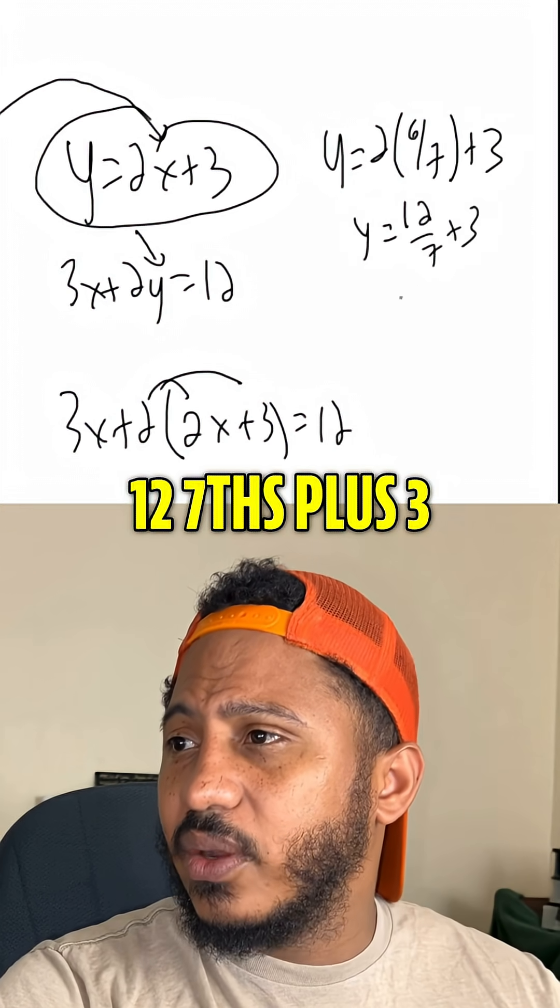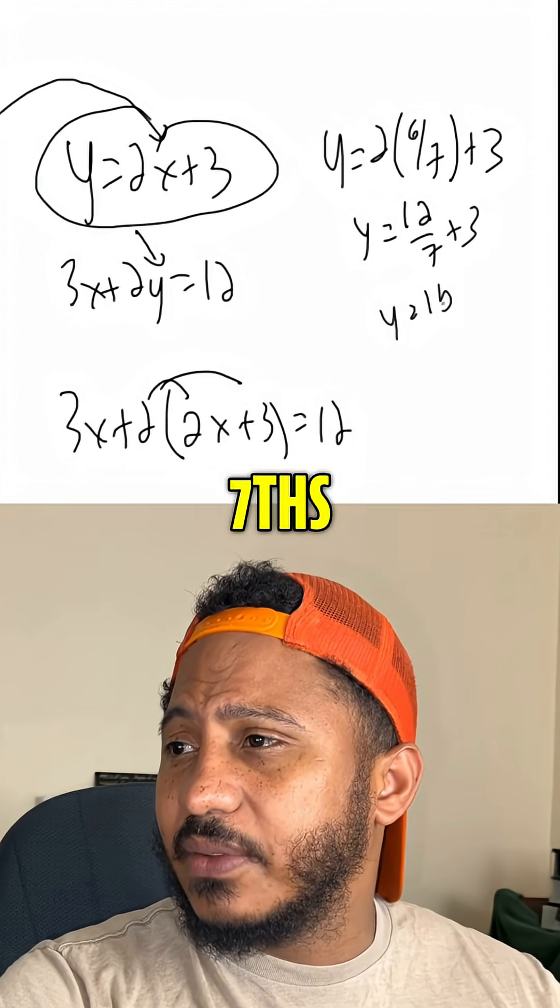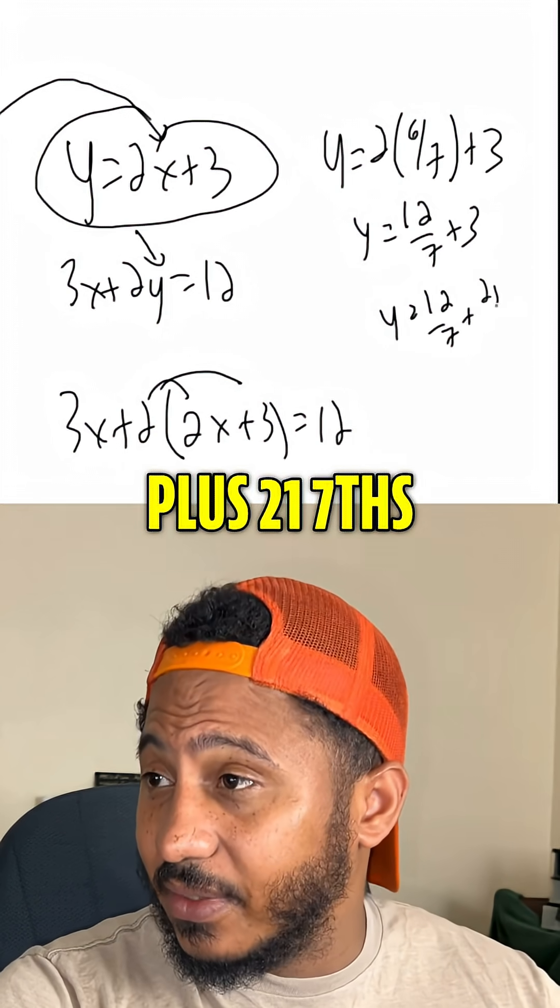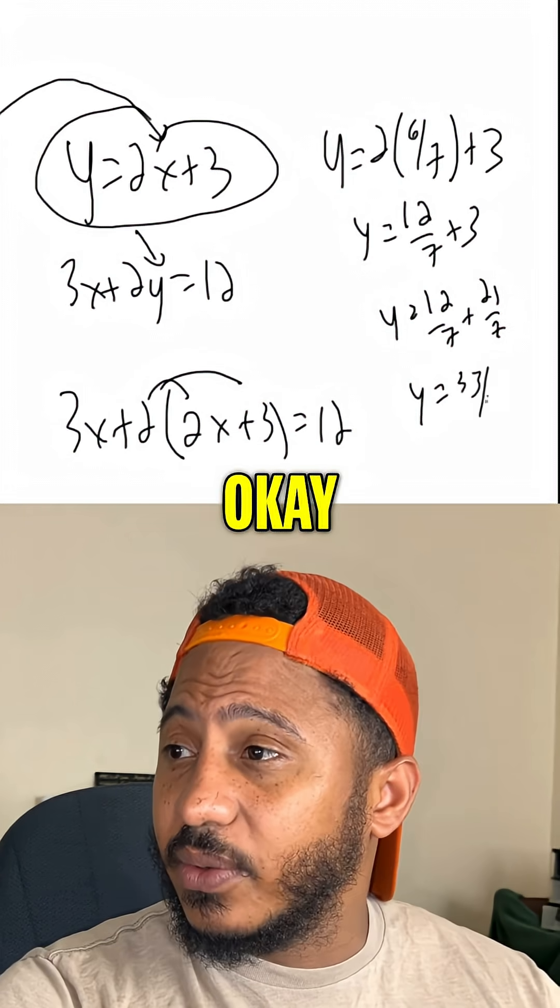So y equals 12 sevenths plus 3. So y equals 12 sevenths plus 21 sevenths. In other words, y is 33 sevenths.